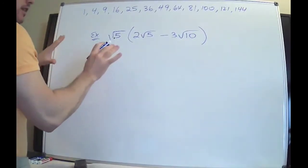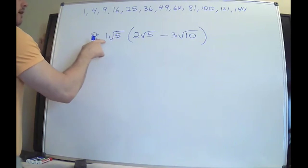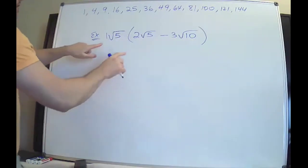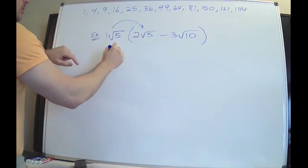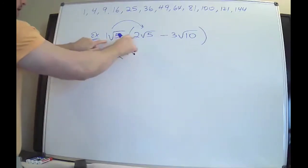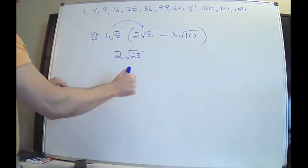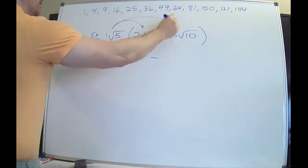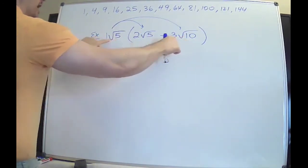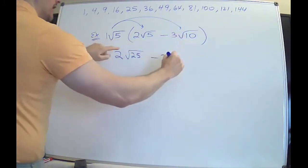The final question is the hardest and most advanced one at this level. Put the little one there — they'll usually have a one here, not a two or three. Distribute one at a time: one times two is two; radical five times radical five is radical 25 — five times five. Then the minus: one times three is three; radical five times radical 10 is radical 50.